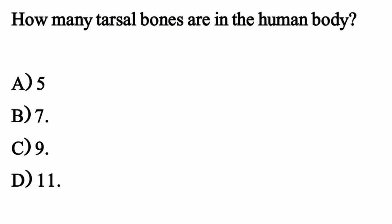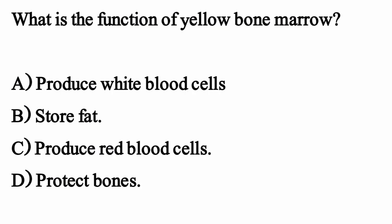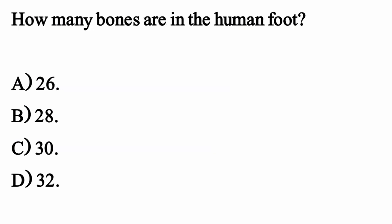How many tarsal bones are in the human body? The correct option is Option B. Which region of the spine has the most vertebrae? The correct option is Option B. How many bones are in the human foot? The correct option is Option B: 26. What is the function of yellow bone marrow? The correct option is Option A.